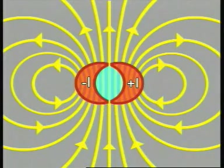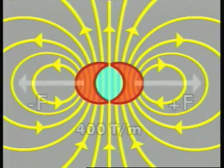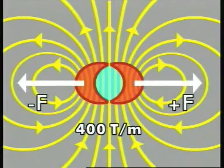The action of the magnetic field on currents minus I and plus I translates into electromagnetic forces minus F and plus F, which tend to open the magnet - 400 tons per meter.